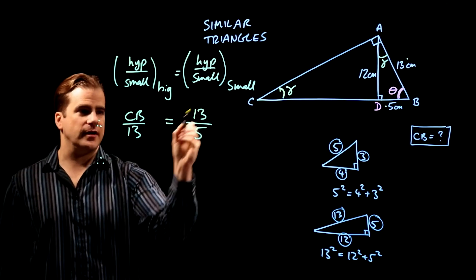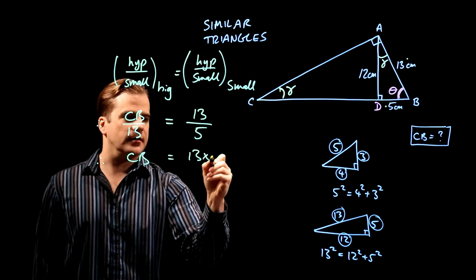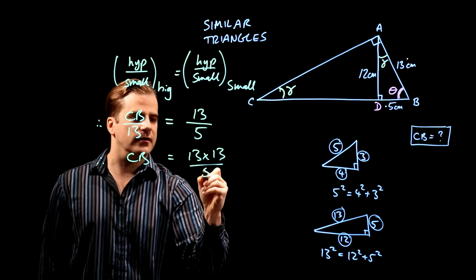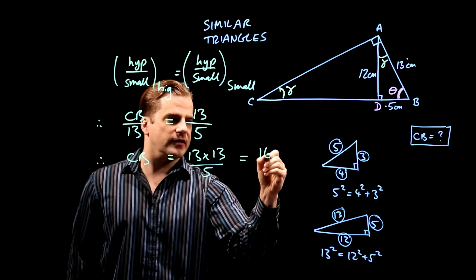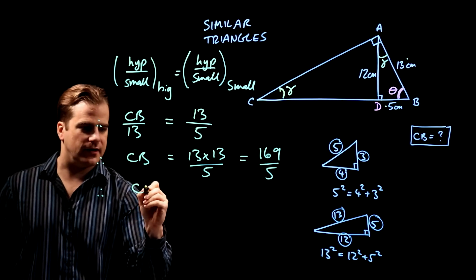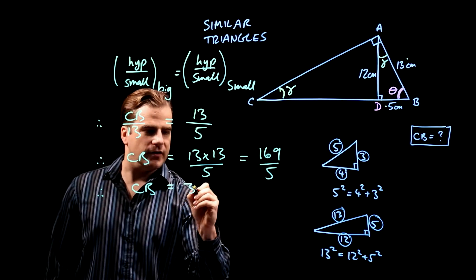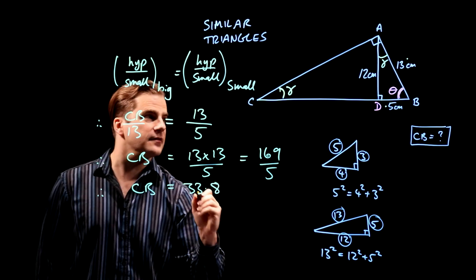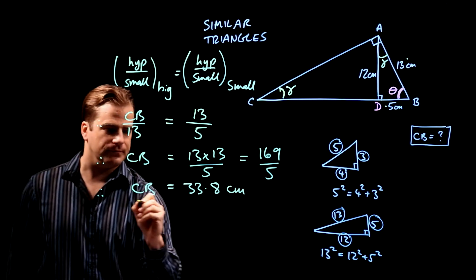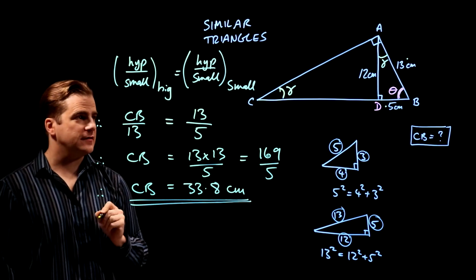Therefore, let's bring the 13 up here. CB equals 13 times 13 over 5, which is 169 over 5. Stick it in your calculator and you get CB equals 33.8 centimeters. That's it. That's how you do similar triangles.